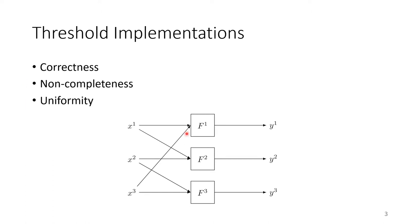Correctness means the masked function is indeed implementing the masking of a particular function f. Non-completeness means each masked boolean function only works on a subset of the shares — for example, f1 only operates on the first and third share but not the second. Uniformity means the masked function is balanced for each particular choice of input secret.